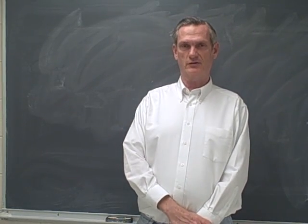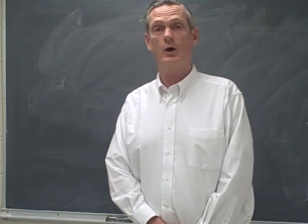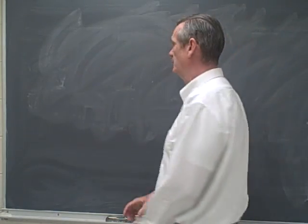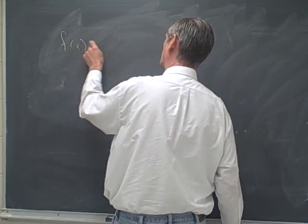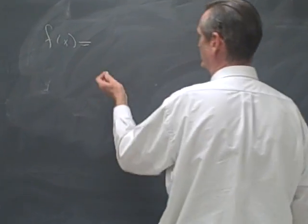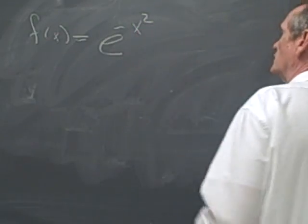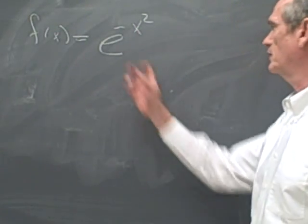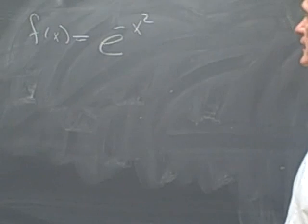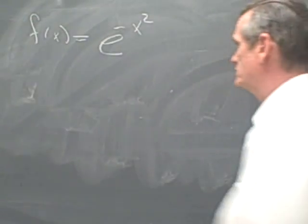Today we're going to sketch the graph of the function y = e^(-x²). I like to write the function in the form f(x), so f(x) = e^(-x²). This is an incredibly important function — with suitable dilations, it's a normal bell-shaped curve, and we're going to find that out.